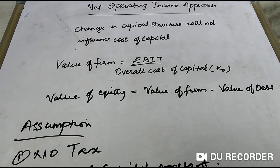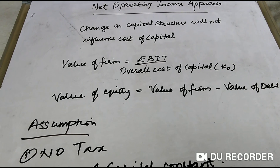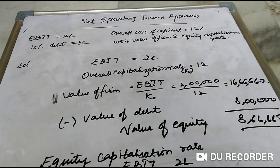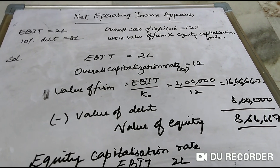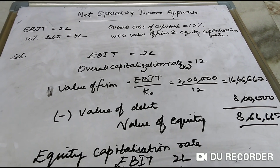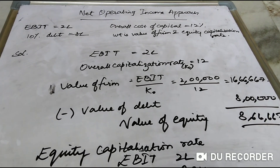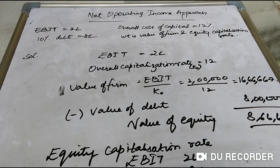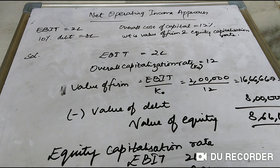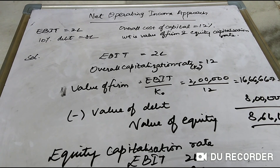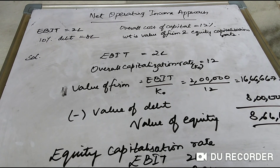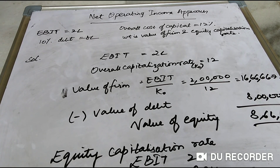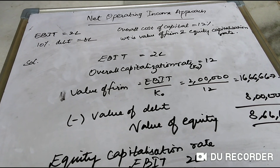Let us do one problem so that it will be easy to understand. In the problem: Operating income (EBIT) is 2 lakh rupees, cost of debt is 10% with 8 lakh rupees of debt. If the overall capitalization rate (K0) is 12%, what would be the total value of the firm and the equity capitalization rate?